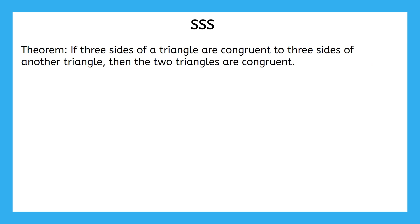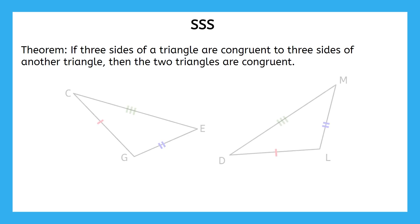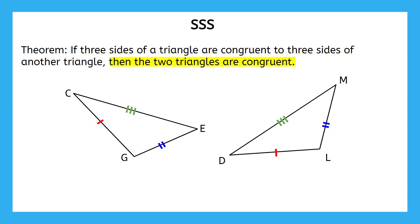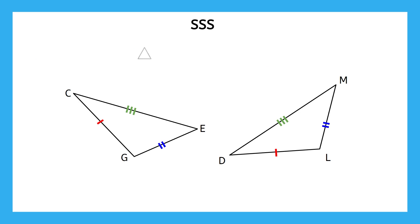The next triangle congruence theorem is the side-side-side congruence theorem. It states that if three sides of a triangle are congruent to three sides of another triangle, then the two triangles are congruent. That's exactly what we have in this visual. According to our theorem, that is enough to say that the triangles are congruent. Now that we've established that, can you write a congruence statement on your own? Pause the video now to catch up on any notes and write a congruence statement for these triangles.